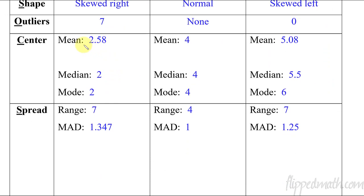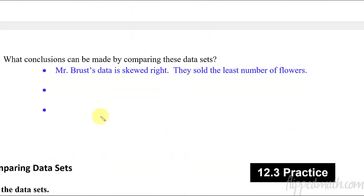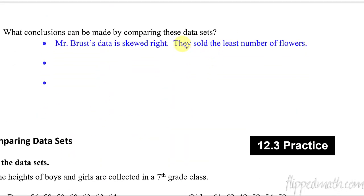And then you could also even compare their mean. Mr. Brust has this mean of only 2.58 compared to these other averages here. Even the median. So every measure of central tendency for Mr. Brust is smaller. So that might be something I could have put in here, that each measure of central tendency is smaller. And so we know Mr. Brust sold the least.